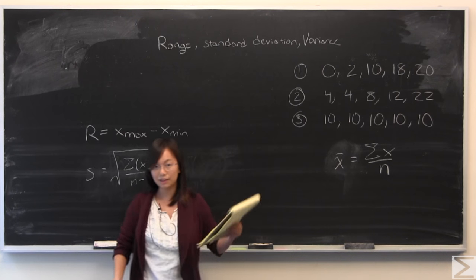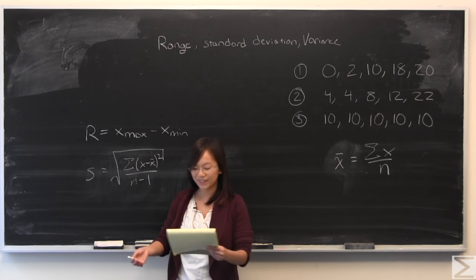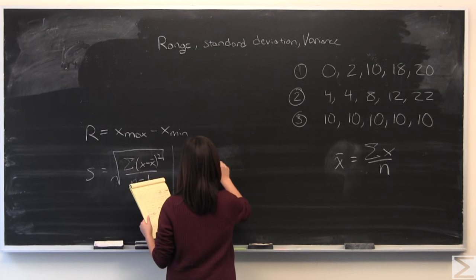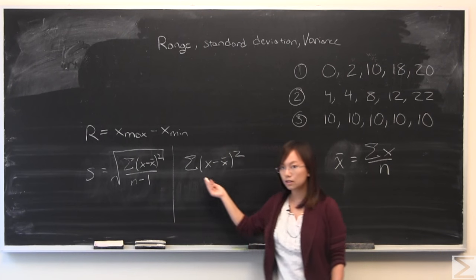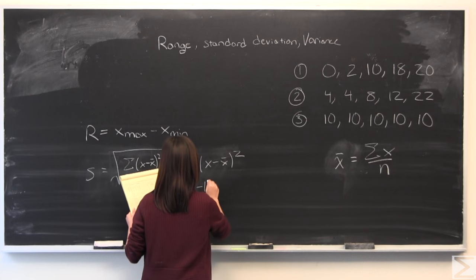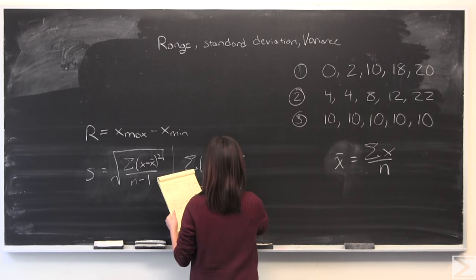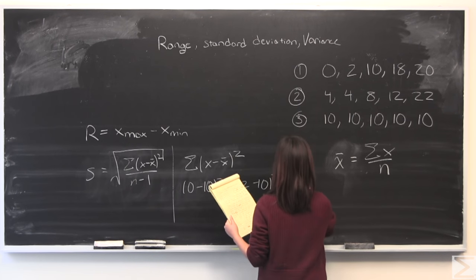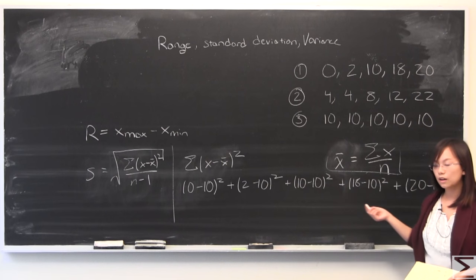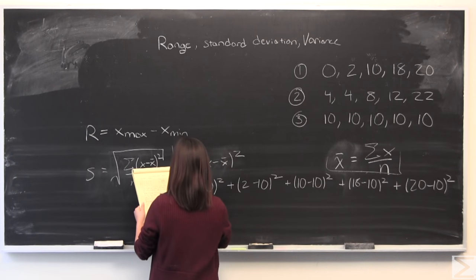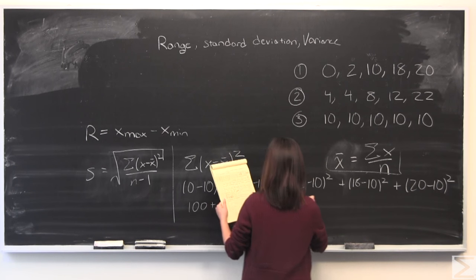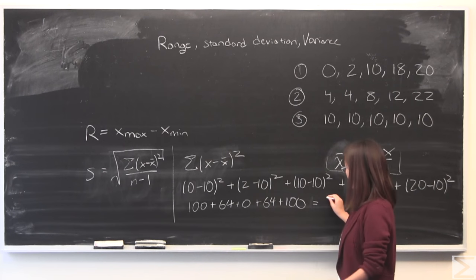I will be doing an example with set number 1. If you can do that, then you can do all three. I'm going to start by calculating the sum of (x minus x̄) squared. As we can see, we have 0, and the average is 10. The next term is 2. You start by summing all of these terms together, and you will get 100 plus 64 plus 0 plus 64 plus 100. This is equal to 328.